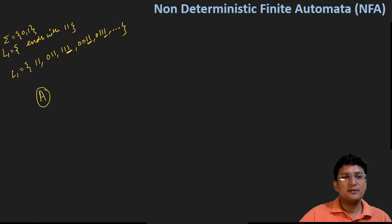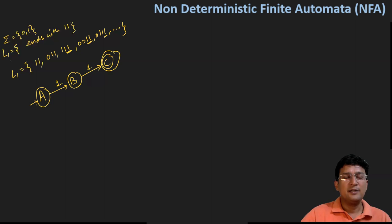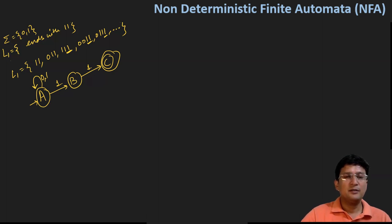The smallest string is only 'one one.' Let's draw the automata for that first. With symbol one, you're moving to state B; with symbol one, you're moving to state C, and C is the final state. This string is ending with 'one one.' But at the beginning, if you get a zero or one, you should remain at the start state itself. We are concerned about the last two symbols — the last two symbols should be 'one one.' This is the NFA for the strings that ends with 'one one.'